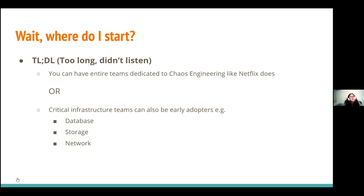Where do you start? In an organization, from an organizational perspective, you can have entire teams like Netflix dedicated to chaos engineering. Or, as early adopters have depicted, you can have specific critical infrastructure teams — those controlling critical components like storage, database, and network — adopting chaos engineering to better the resiliency of their part of the infrastructure. This may not benefit a specific application if you're a developer, but it works toward bettering an entire suite of infrastructure, which makes more sense if you're an enterprise-level company.